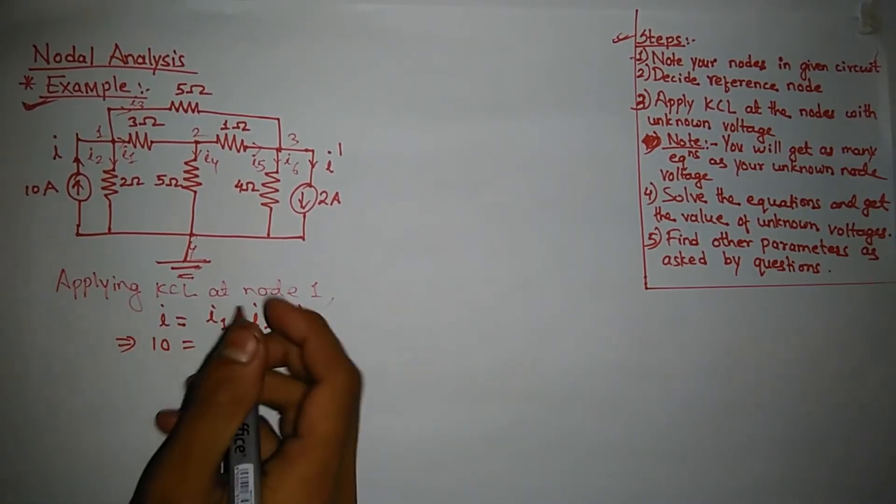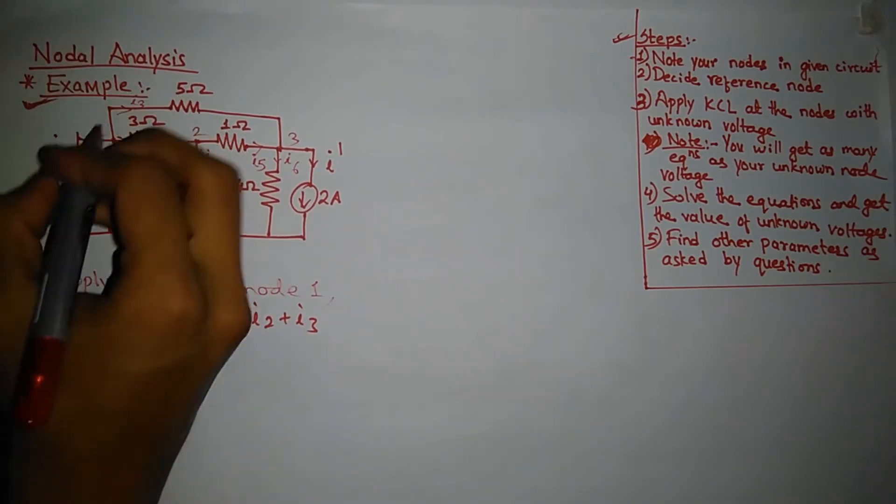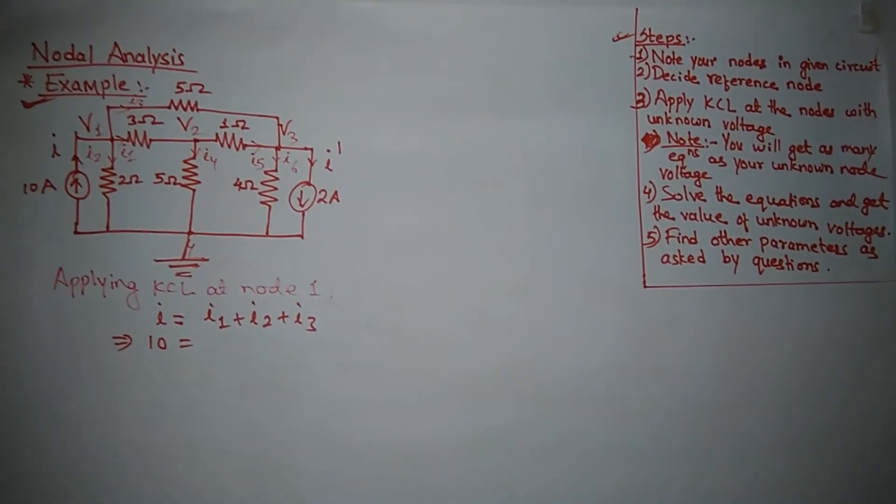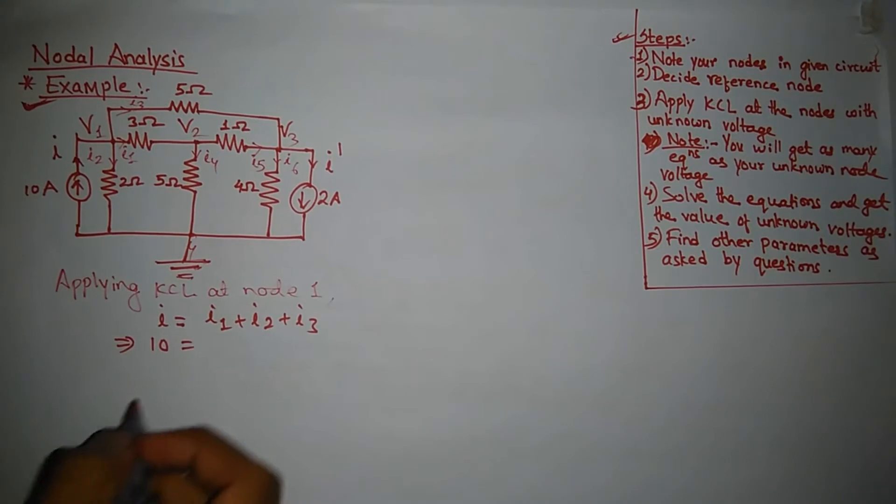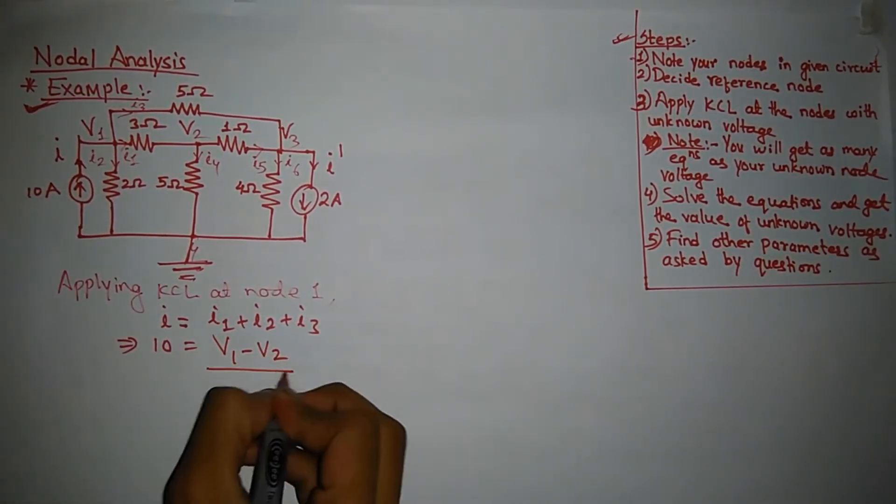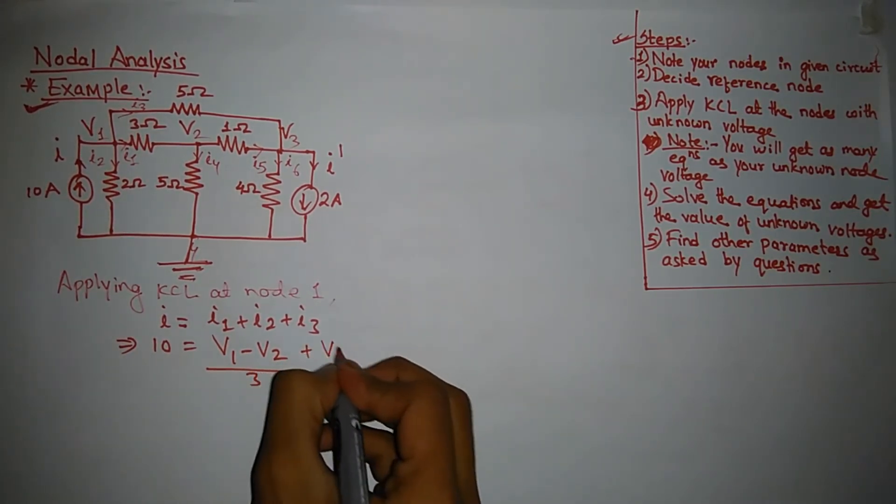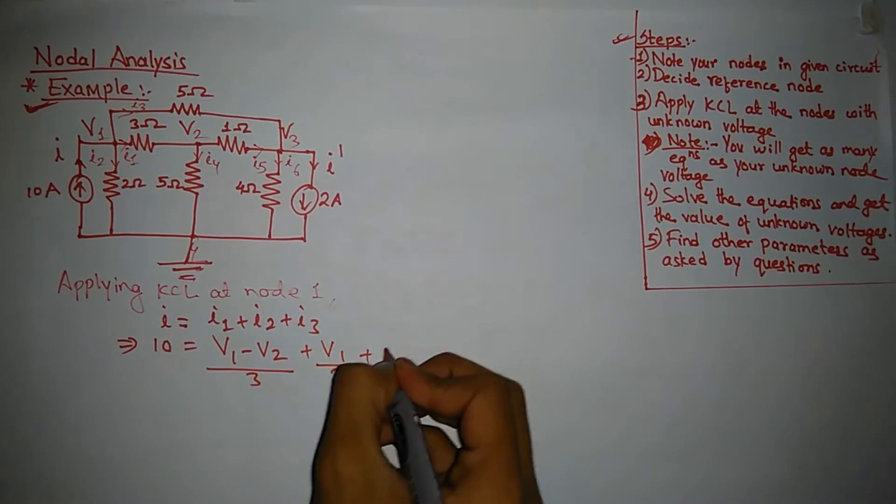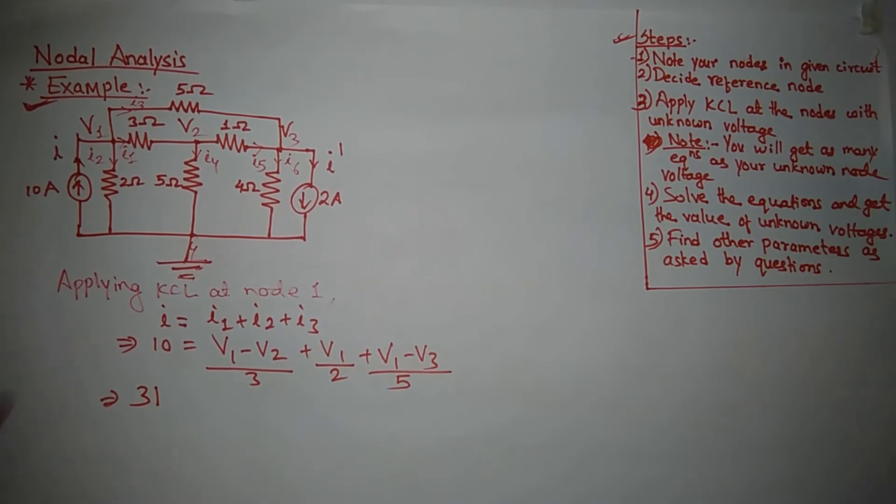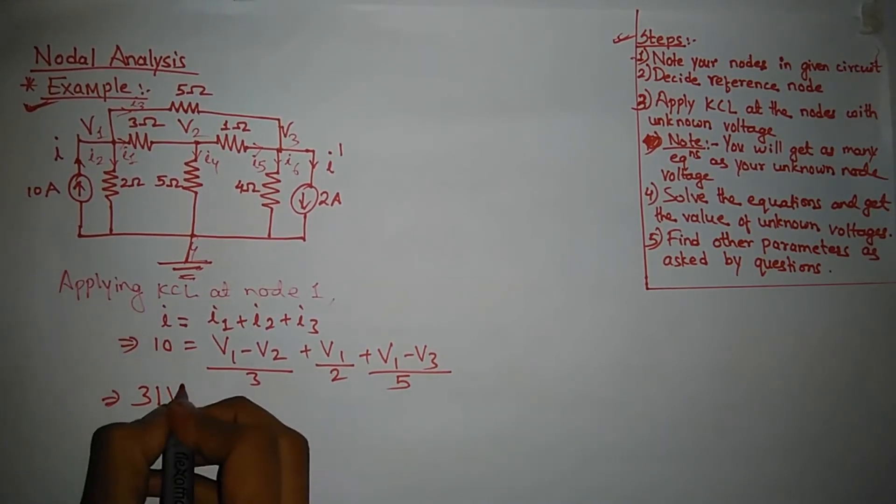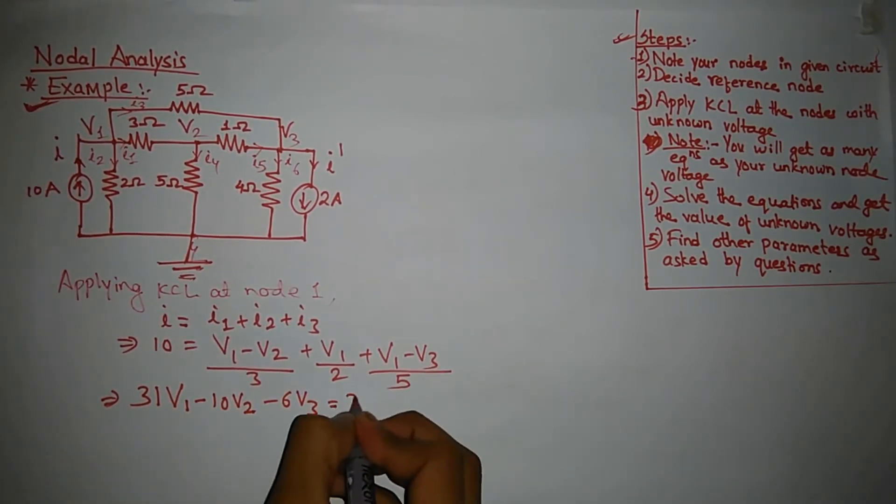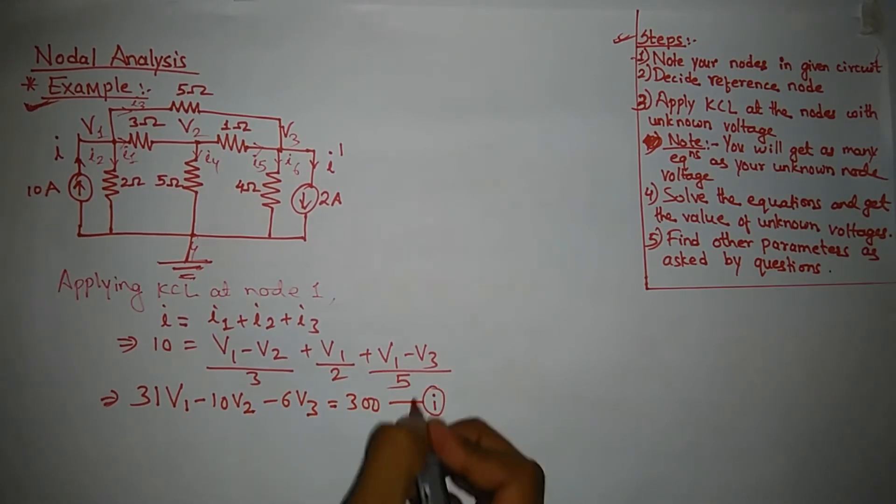I1 is equal to V1 minus V2 upon 3, I2 is equal to V1 upon 2, and I3 is equal to V1 minus V3 upon 5. On solving the mathematics, I will get the equation: 31V1 minus 10V2 minus 6V3 is equal to 300. This will be our equation one.